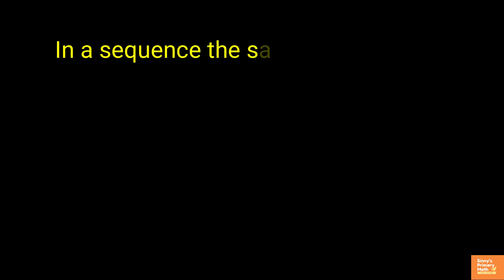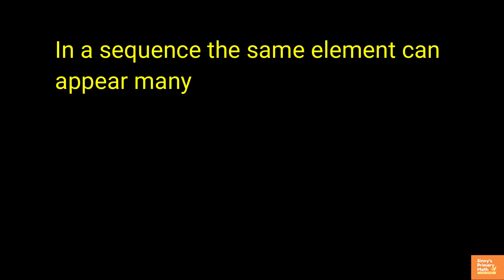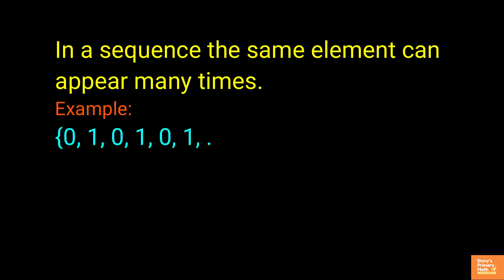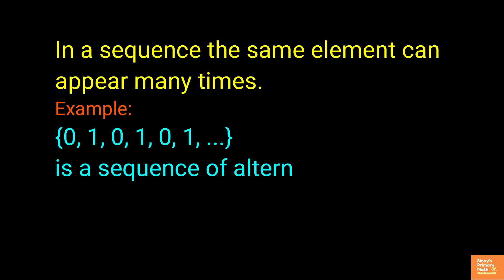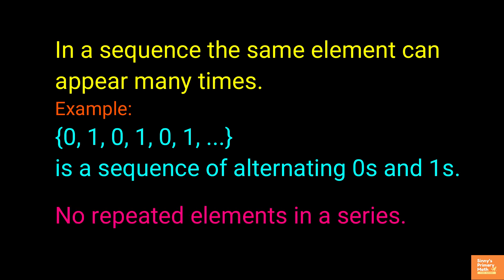In a sequence, the same element can appear many times. For example, 0, 1, 0, 1, 0, 1, and so on is a sequence of alternating zeros and ones. There are no repeated elements in a series.